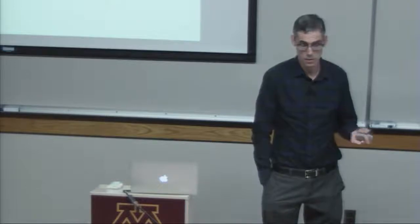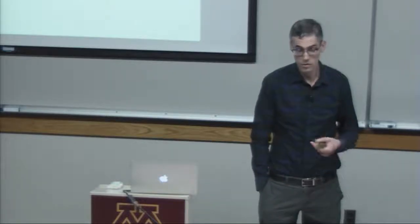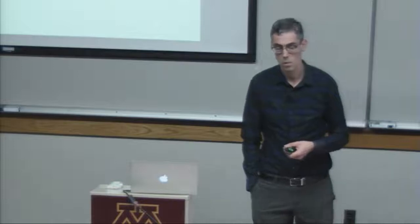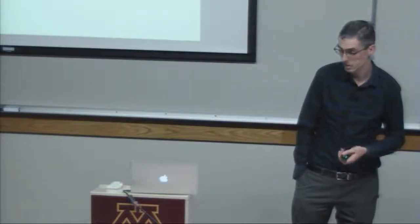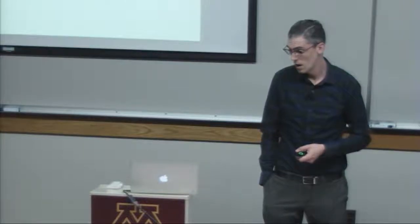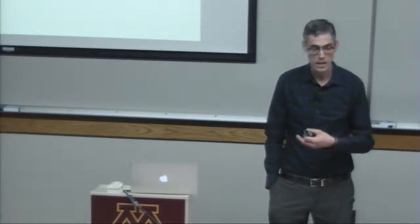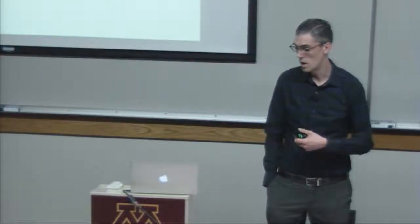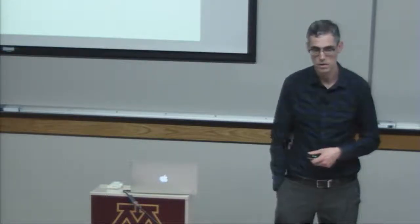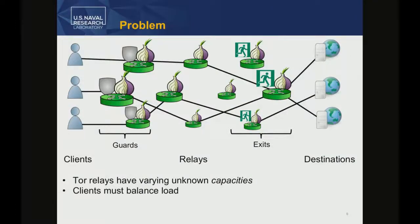TOR doesn't know what the bandwidths are exactly because relays are run by volunteers who might not know what their bandwidth is or how to report it, and in any case we can't really trust them. To take advantage of these resources, clients need to know what the bandwidths are and choose relays in proportion to how much resources they provide.